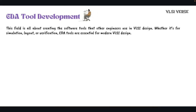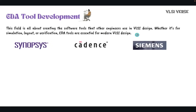EDA tool development is all about creating the software tools that other engineers use in VLSI design — whether for simulation, layout, or verification. EDA tools are essential for modern VLSI design. There are three giants in EDA tool development: Synopsys, Cadence, and Siemens. These are the only ruling electronic design automation tool companies in the world. If you have strong programming skills and want to work on developing cutting-edge tools, EDA tool development could be your path.